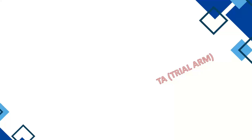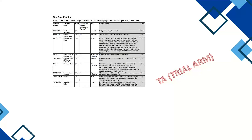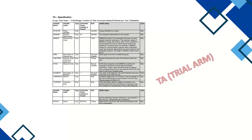As per the implementation guide, these are the variables that have to be included in the Trial ARM dataset: STUDYID, DOMAIN, ARMCD, ARM, TAETORD, ETCD, ELEMENT, BRNCHID, and so on. These variables shown here must be included in the dataset.